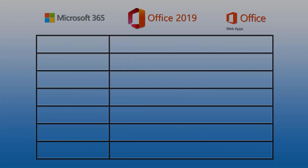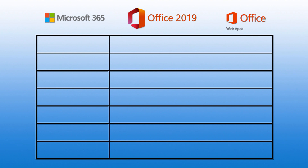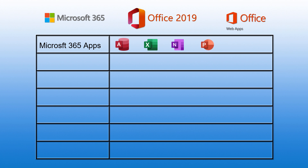The three areas are: Microsoft 365; Office, currently at version 2019, which is typically updated every three years; and third, Office Online. There are many software programs included in this mix, but to simplify things, these programs can be broken down into groups. There are Microsoft 365 apps, which include Access, Excel, OneNote, PowerPoint, Publisher, and Word.